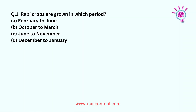Rubby crops are grown in which period? A. February to June. B. October to March. C. June to November. D. December to January.